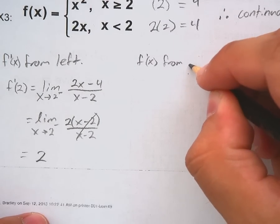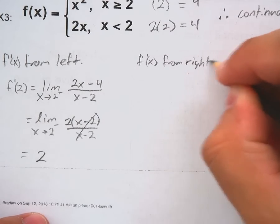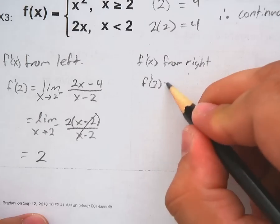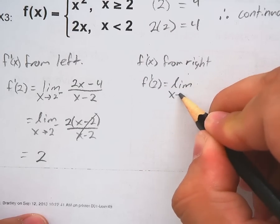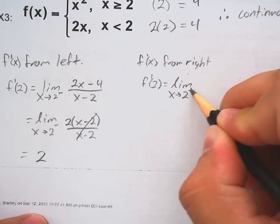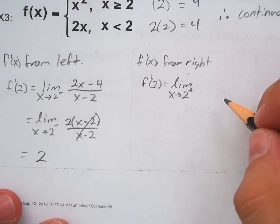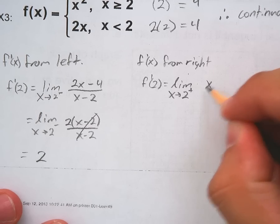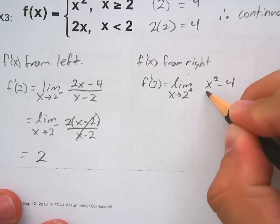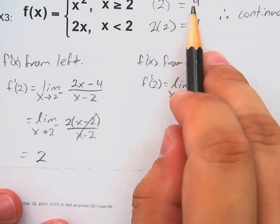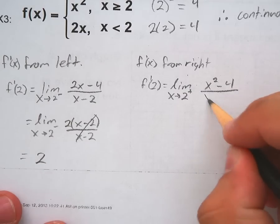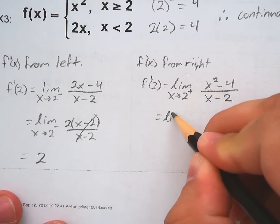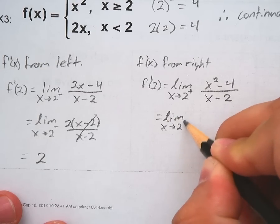f of x prime from the right is f prime of 2, the limit as x goes to 2 from the right. That's where x is greater than, so the top one, x squared minus 4, f of x minus f of c over x minus c. That's going to be the limit as x goes to 2 from the right.